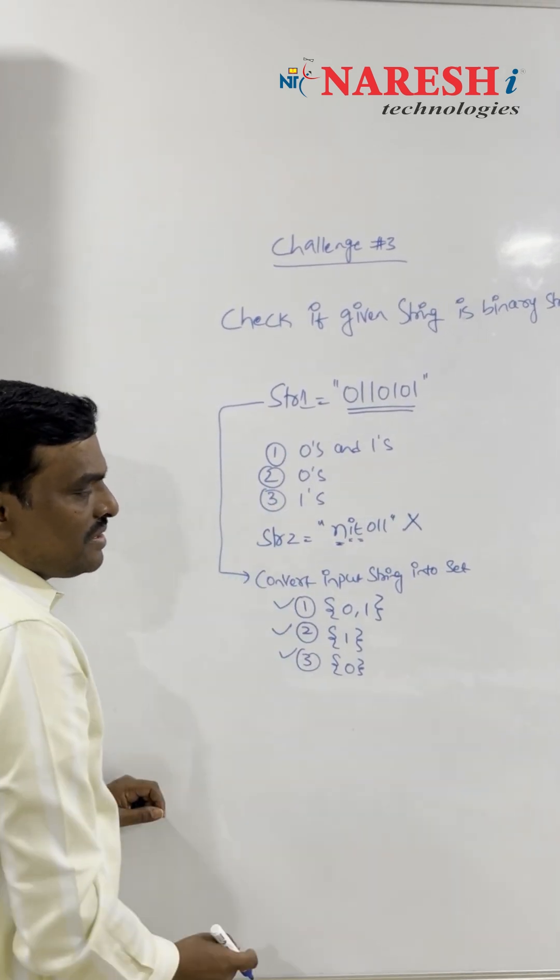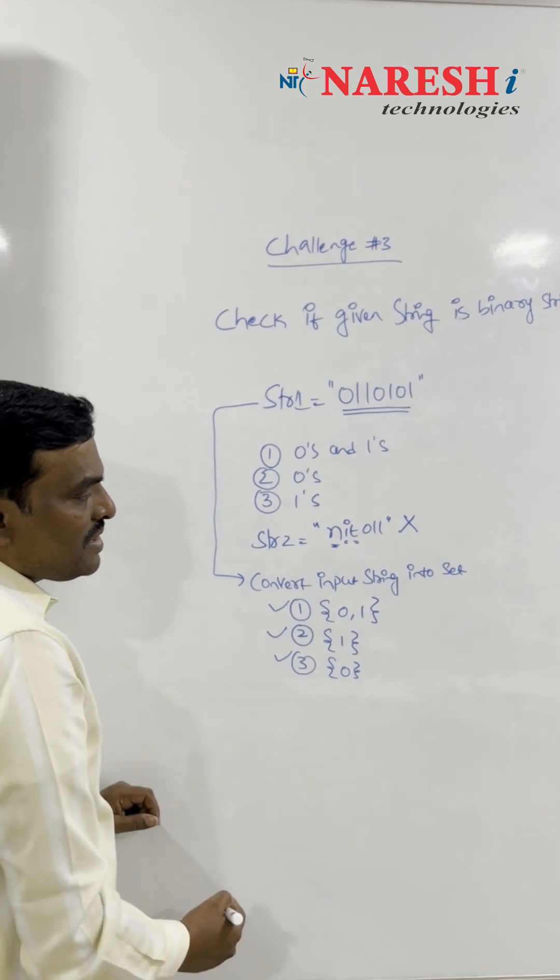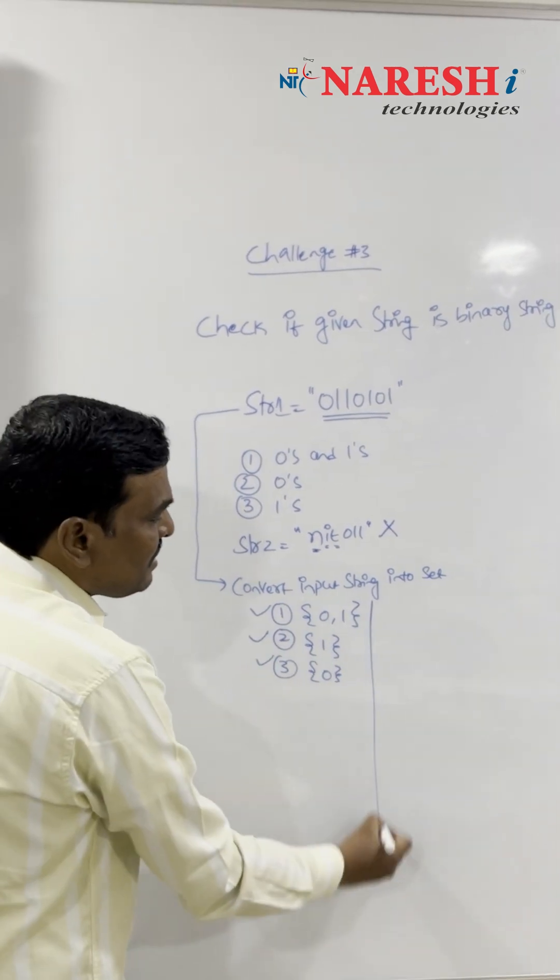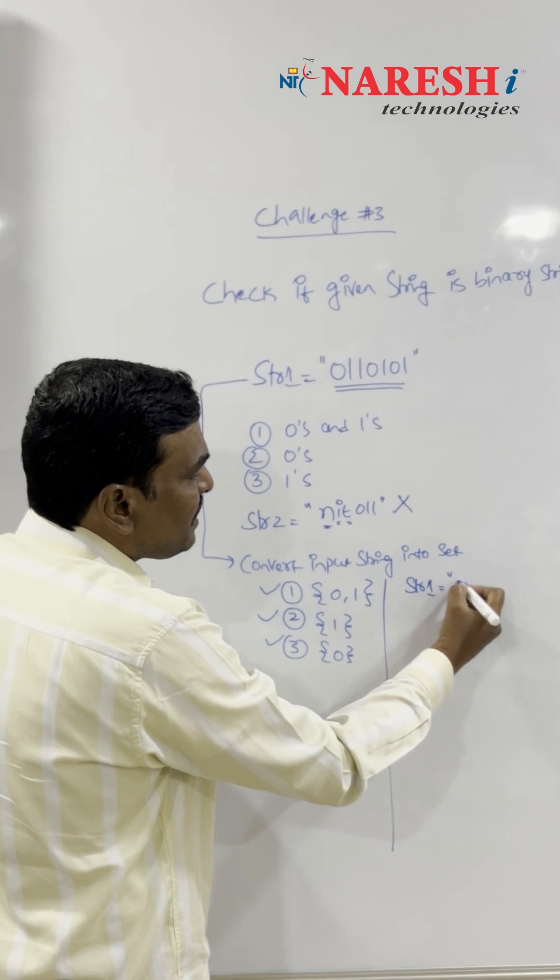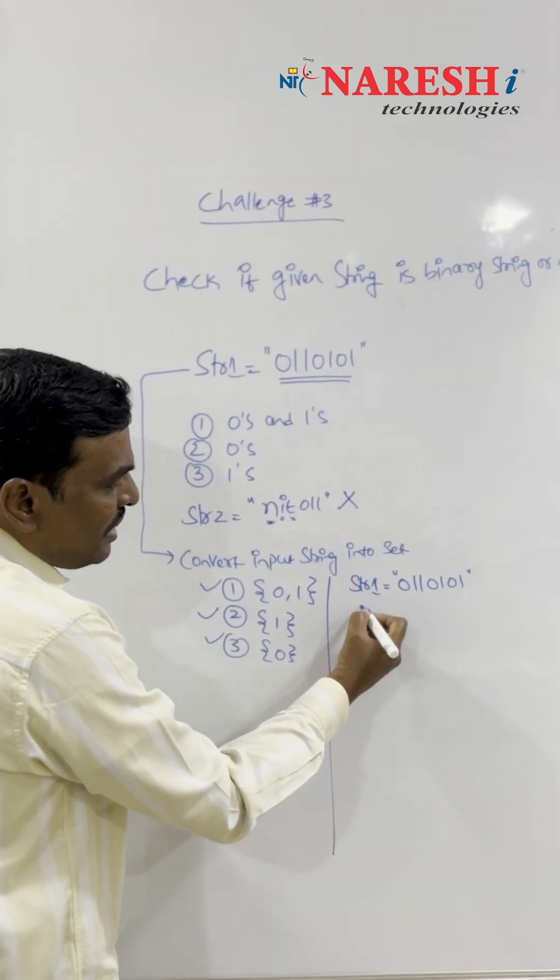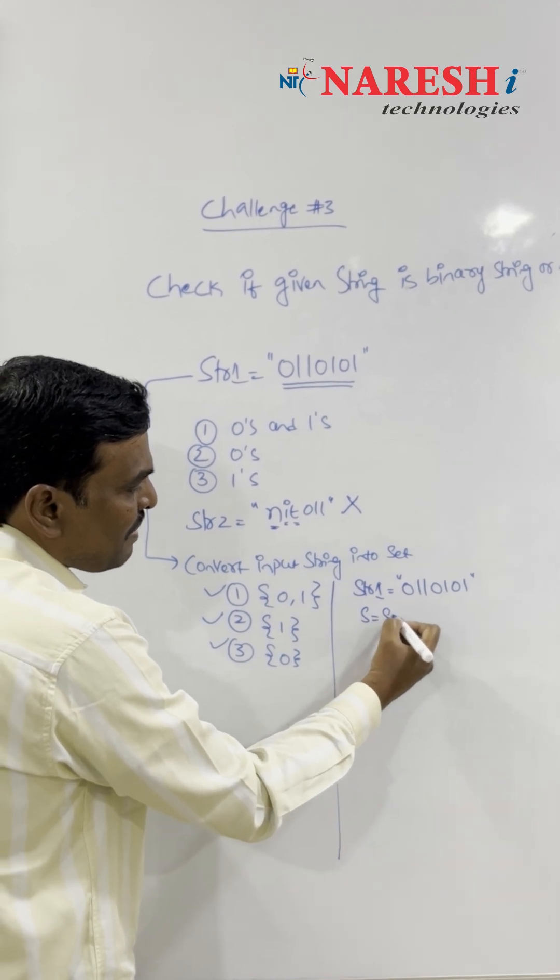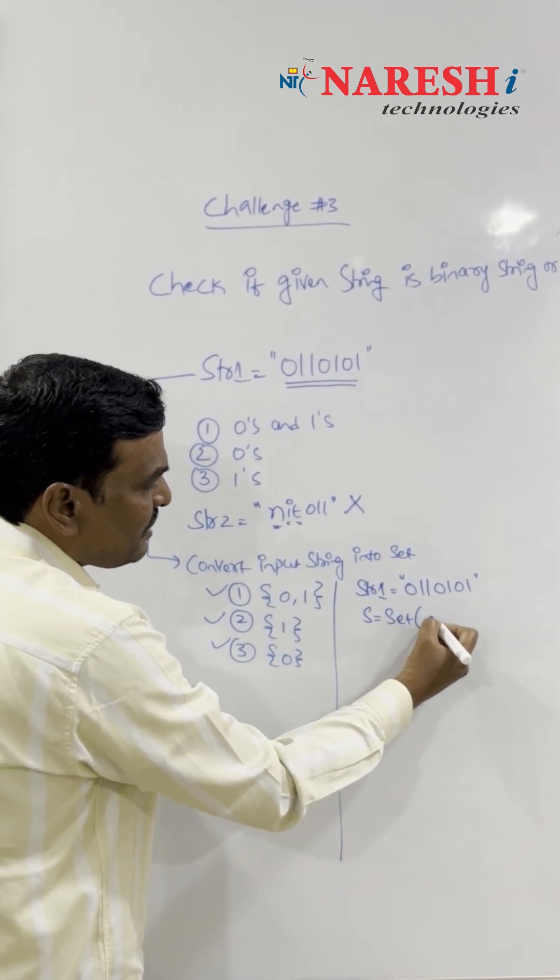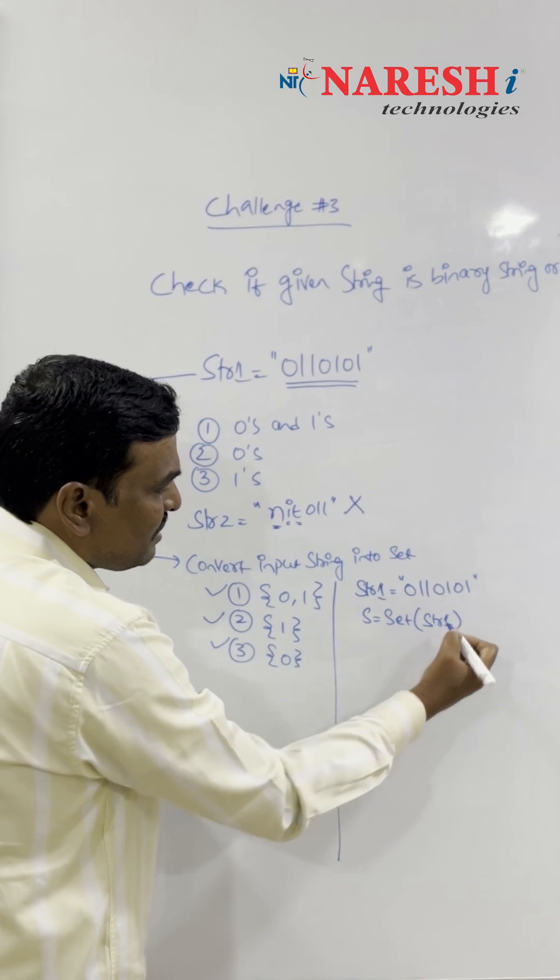Now let us see this practically. For example, the string is like this: str1 equals '011010'. Convert the string into a set by saying s equals set of str1, so here the string is converted to a set.